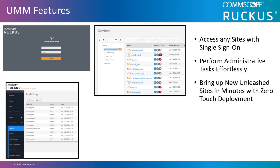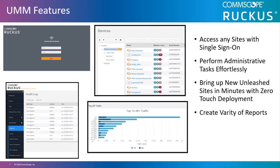Bringing up new Unleashed sites takes just minutes. By using zero-touch deployment, you can create a database backup file with all the configuration information for a site and replicate the network at a different site using that cookie-cutter backup file. You can also restore a site in minutes in case of a disruption at any location. UMM can create detailed and customizable reports about APs, wireless LANs, client connectivity trends, rogue APs, or mesh changes for a specified time period.